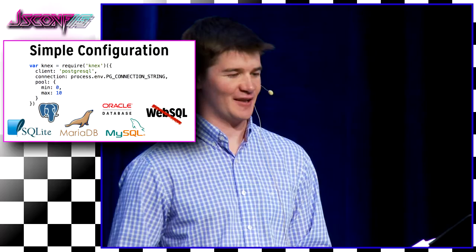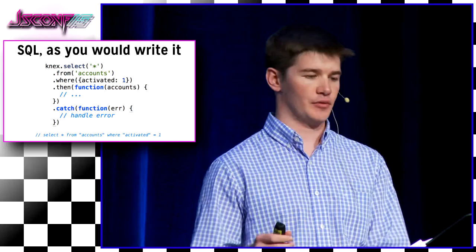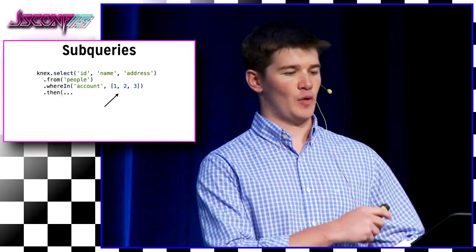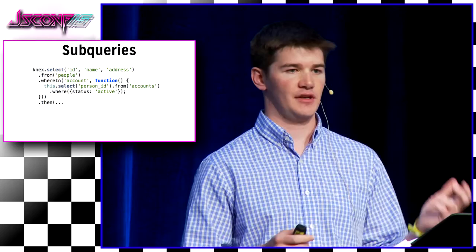How you get started with Knex is to just give it a connection string. If you want to configure the pool, you can do that. It works against a number of different databases, including Oracle — somebody just opened a pull request, and it was like, I don't use Oracle, but that's awesome, yay open source. It also supports Web SQL, but I don't really recommend that because it's deprecated. What it tries to do is make it so you don't have to concatenate strings to build SQL. So it's SQL as you'd write it — select all from accounts where activated is one — and then you call 'then' on it with the familiar promise chaining API.